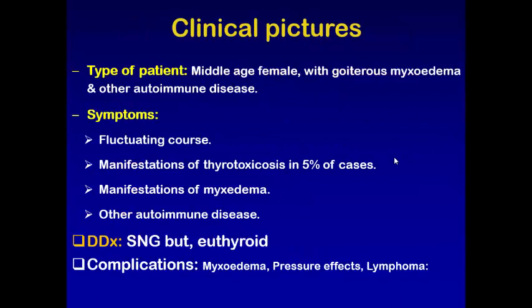Regarding the clinical picture, the patients affected are usually middle-aged females with goiter, myxedema, and other autoimmune diseases. Since this is an autoimmune disease, it is common in females, and it has a fluctuating course — meaning there are periods of exacerbation and periods of remission.